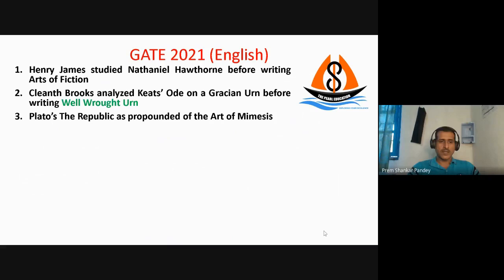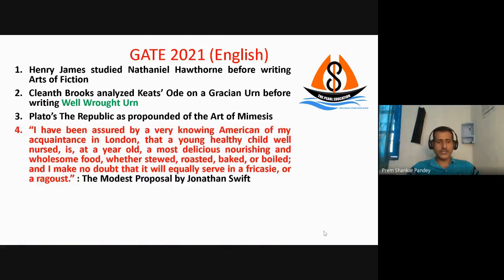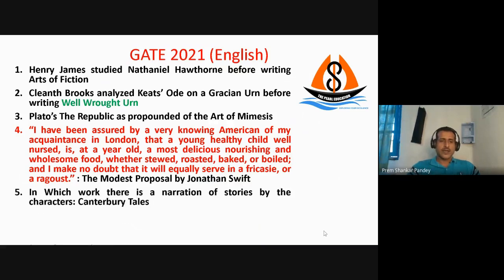The fourth question was a quotation that was given. This quotation was from 'A Modest Proposal' by Jonathan Swift. Question number five was: in which work is there a narration of stories by the characters? The answer was Geoffrey Chaucer's Canterbury Tales.